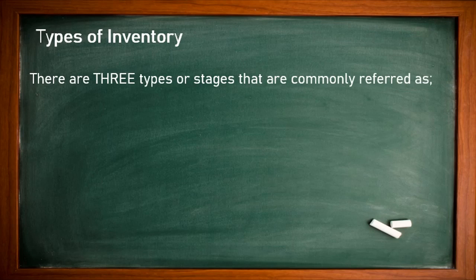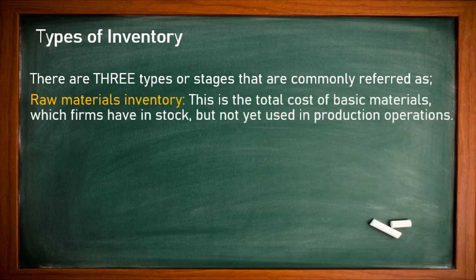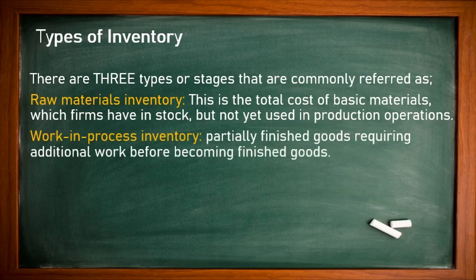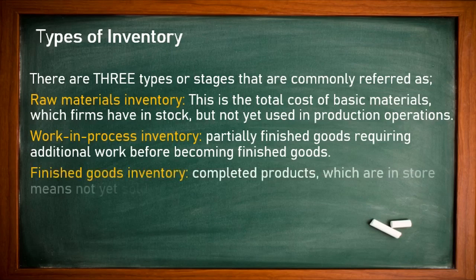There are three types of inventory. First, raw material inventory — the total cost of basic materials a firm has in stock for making a product but not yet used in production. Second, work-in-progress inventory — partially finished goods requiring additional work before becoming finished goods. Third, finished goods inventory — completed products in the warehouse that have not yet been sold. These three types are common in all manufacturing or production-based companies.